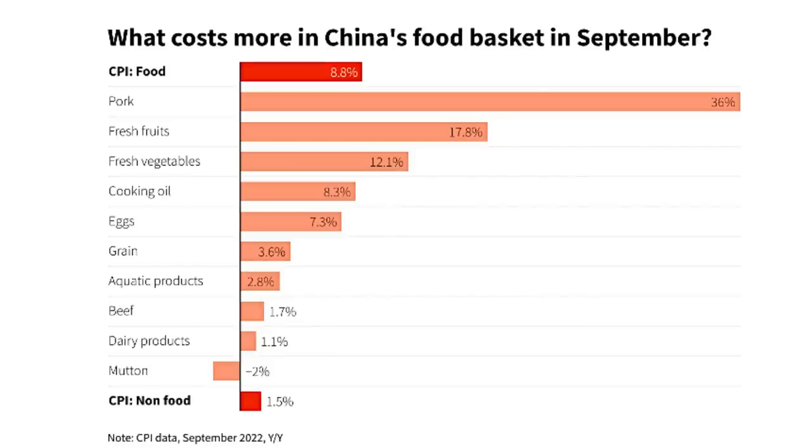China has announced that inflation in September hit 2.8%, which is the highest level seen for 29 months. The main driver behind price increases was the movement in food costs. Food prices in the 12 months to September were up 8.8%, a massive increase from the 6.1% 12-month position we saw in August. The biggest single contributor was the price of pork, which increased by 36%. China is the world's biggest consumer of pork — it's the most popular meat in the country — and the industry has been hit by a number of problems.